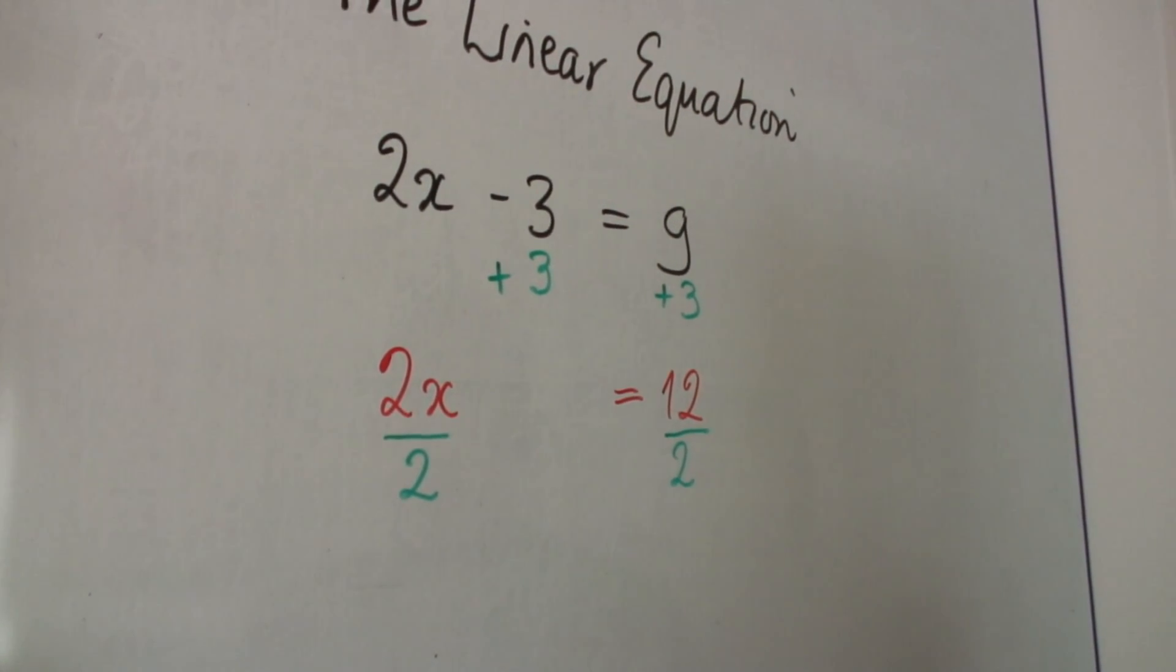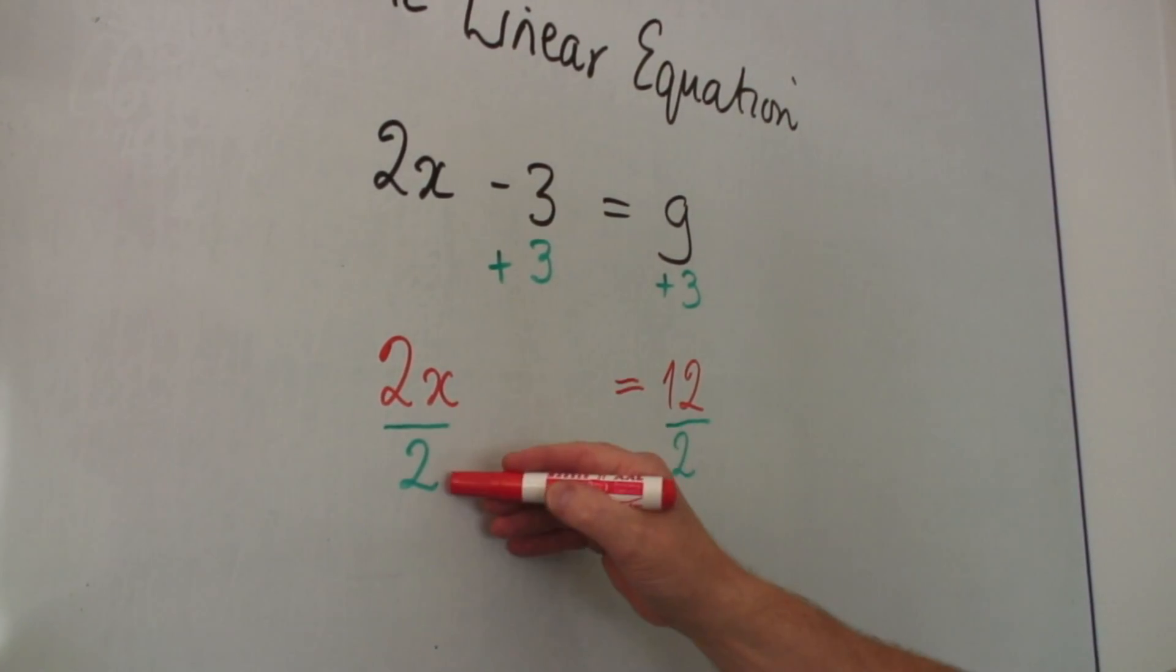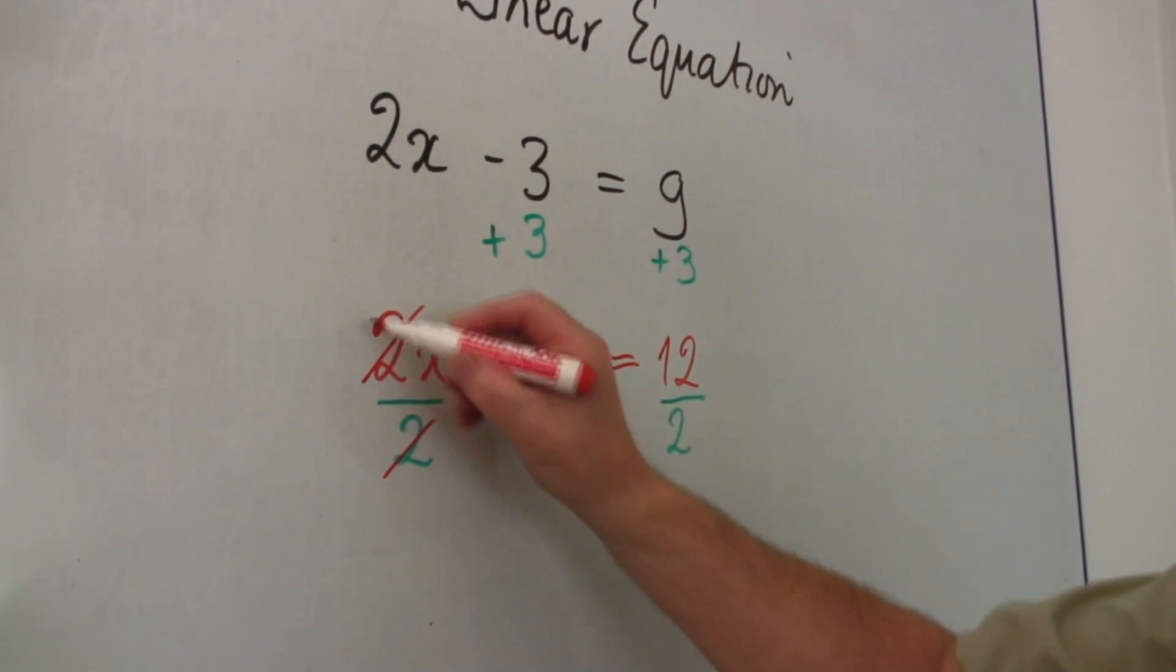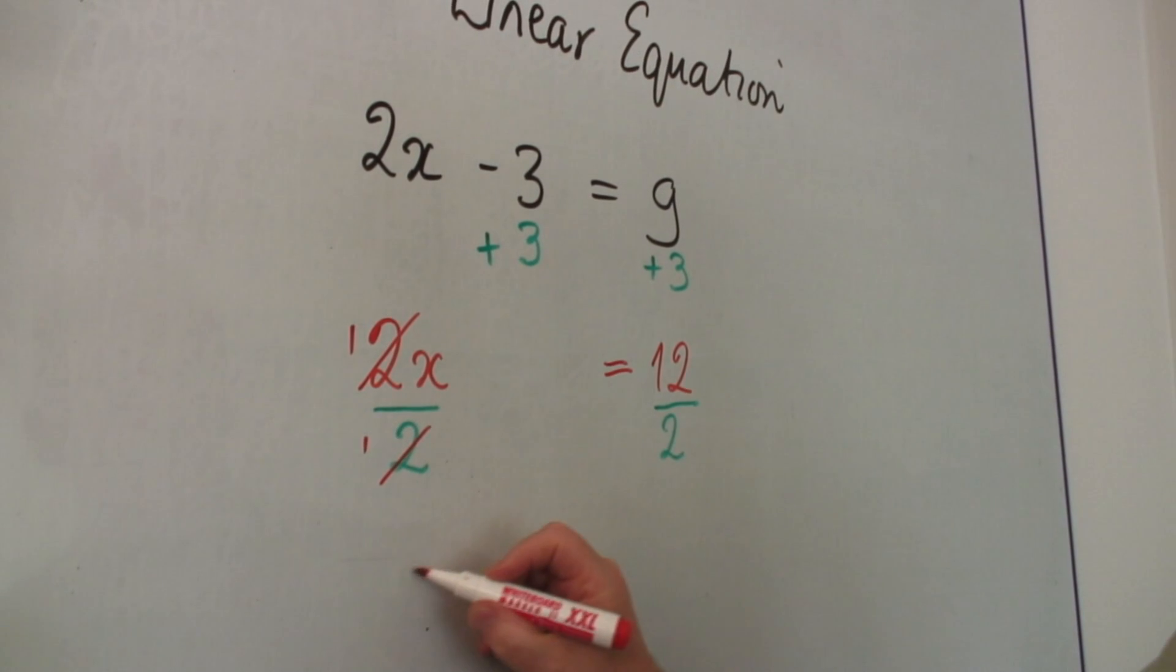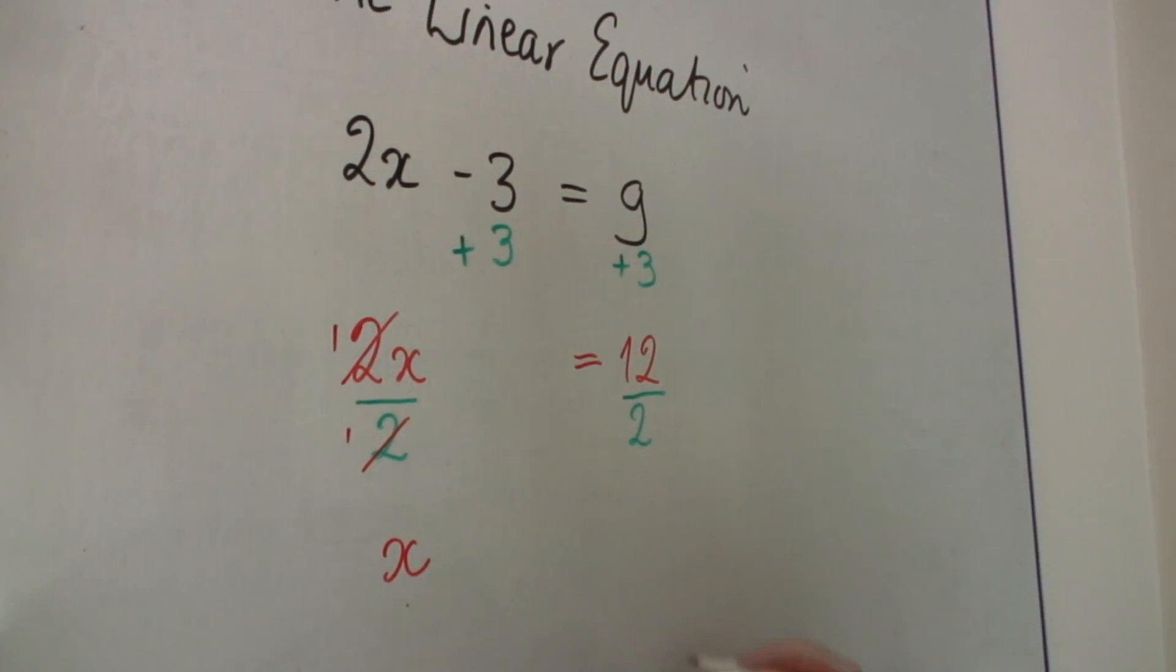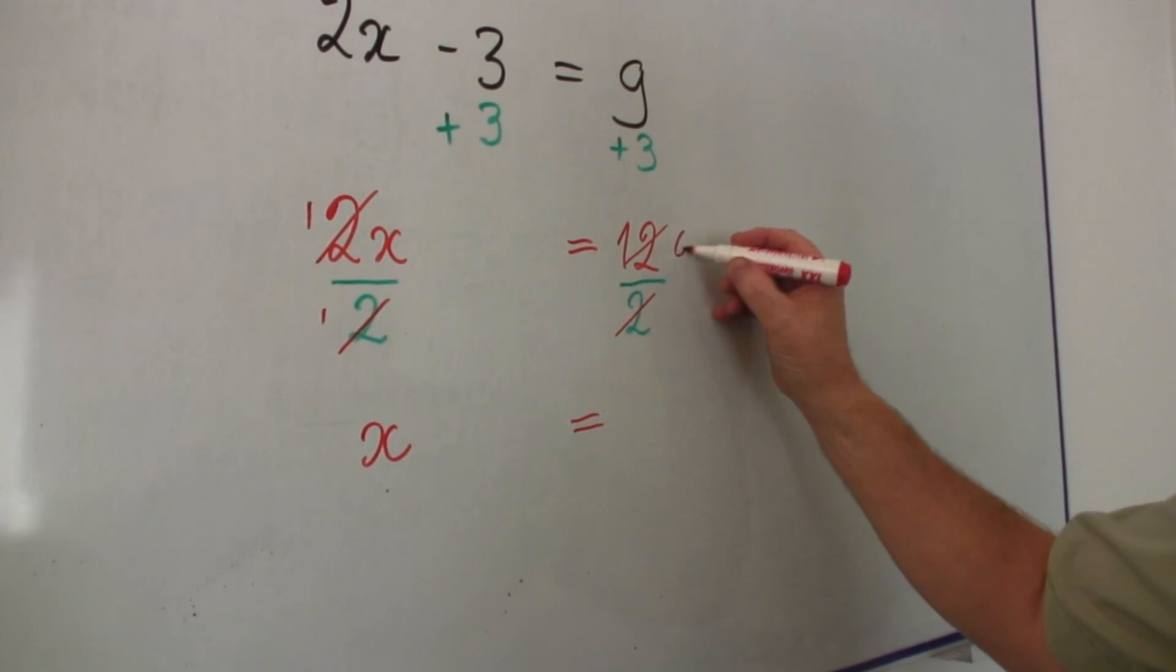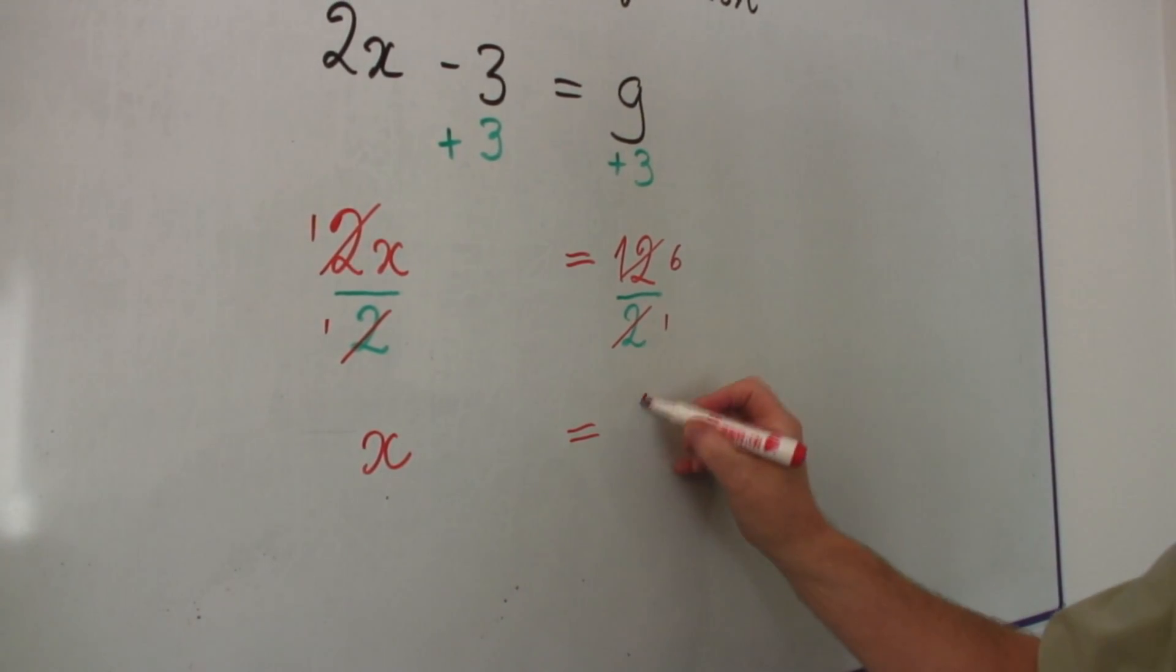So what do I get? Well, 2x divided by 2. I can cancel those two. I'll get 1. In fact, I get x. And on this side, 12 divided by 2 is 6.